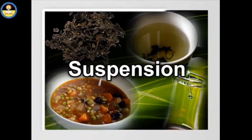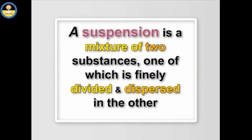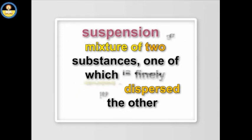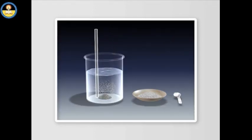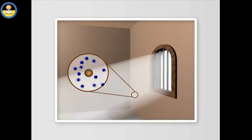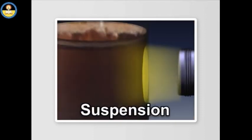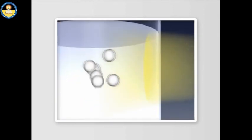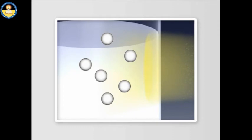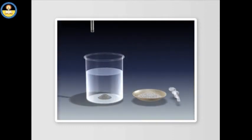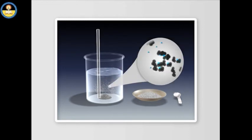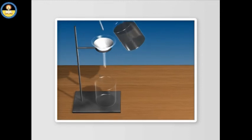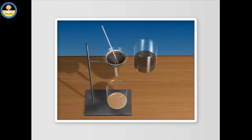A suspension is a mixture of two substances, one of which is finely divided and dispersed in the other. Examples of common suspensions are sand in water and dust in air. The particles in a suspension are larger than those in a solution — they are visible under a microscope and can often be seen with the naked eye. Particles in a suspension will settle down if the suspension is allowed to remain undisturbed, and many particles can be separated through filtration.